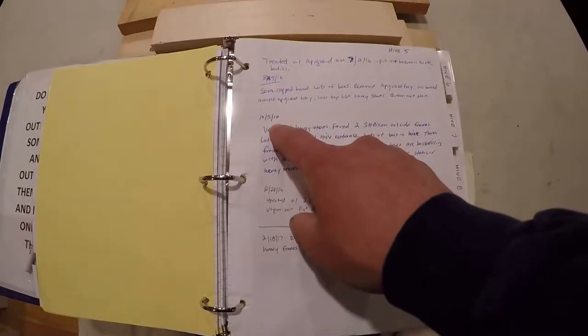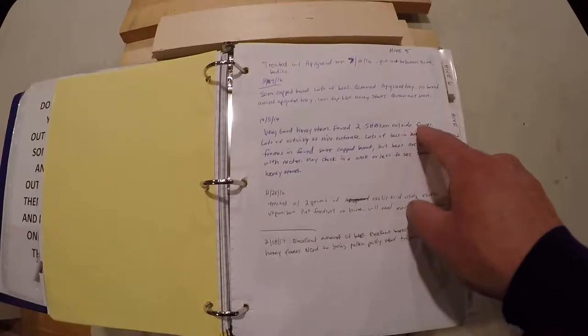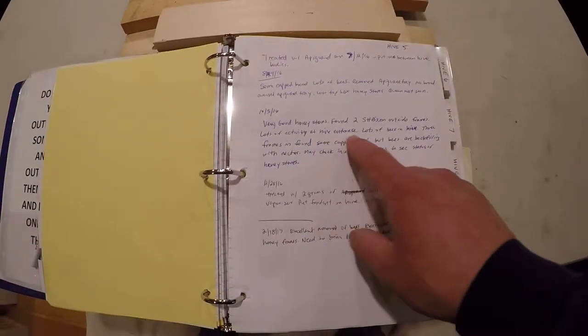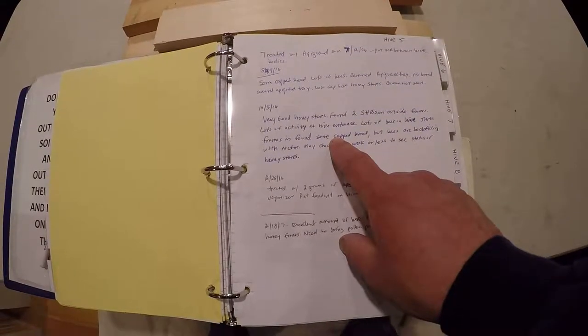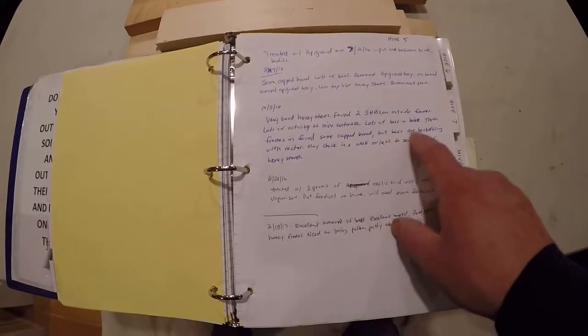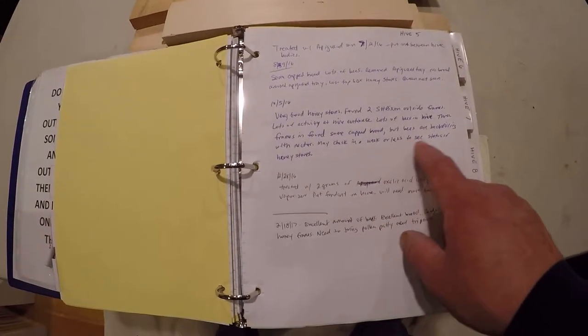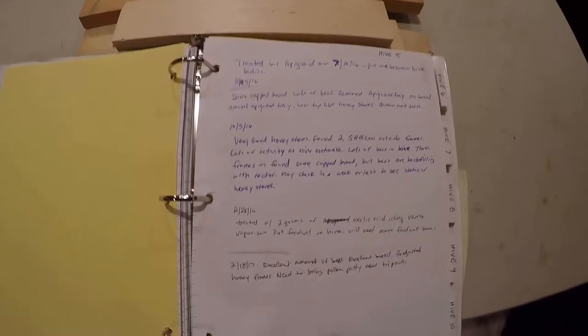On 10-5, very good honey stores, found two small hive beetles in outside frames, lots of activity at hive entrance, lots of bees in the hive, three frames found, some capped brood, but bees are back filling with nectar, may check in a week or less to see the status of the honey stores. So these are just some of the notes that I keep here in my book.